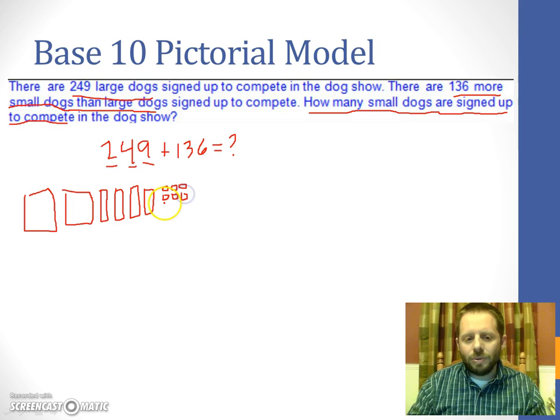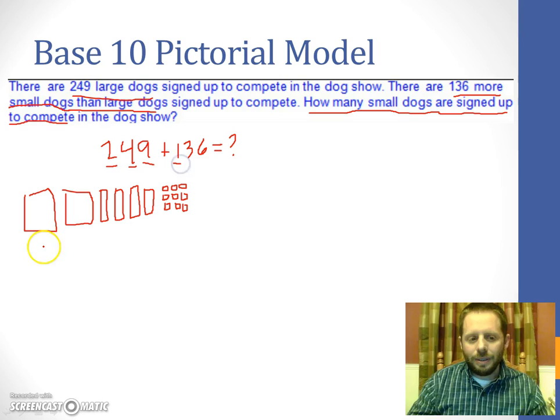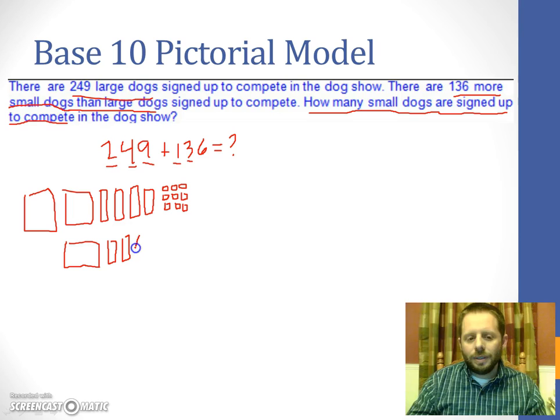Now since we're adding, we're going to add the next number 136 directly underneath it. So we're going to start with the one, which will require one flat. We're going to make the three, which is three longs for 30. And finally, we're going to make the six, which is six of our little unit blocks. Since this is an addition, we are adding these pieces to the original pieces. So the total of our pieces represents our answer.